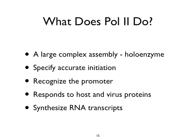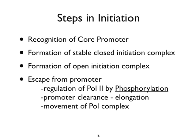So what does Polymerase II do? It's a very large, complex assembly. The holoenzyme contains a number of different proteins. They specify accurate initiation of RNA transcripts, recognize the promoter — but usually do it in response to host and virus proteins. Isolated RNA polymerase by itself can initiate transcription, but not as efficiently as when it's in the presence of accessory molecules. They synthesize RNA transcripts by recognition of that core promoter element containing the TATA sequence and the five-prime end for initiation.